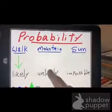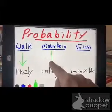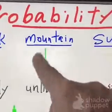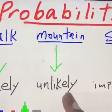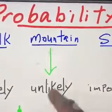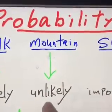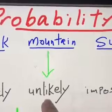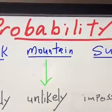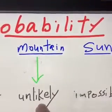Now let's go to number two — Mountain. Let me draw an arrow. Mountain connects to Unlikely. For example, Elsa wants to go on mountains. Unlikely means something that probably won't happen. Sammy will go for a walk with his dad — that's Likely. But Elsa won't be able to climb up the mountains — that's Unlikely.